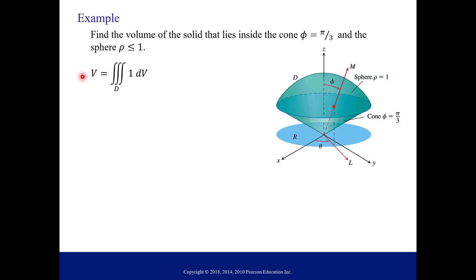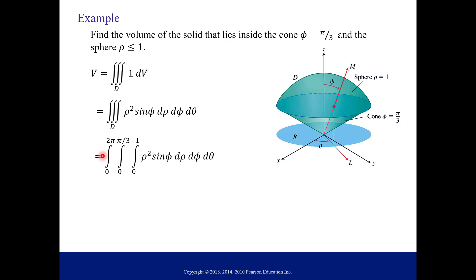The volume using a triple integral is the triple integral over region D of 1 times dV. We convert dV into spherical coordinates: ρ² sin φ · dρ · dφ · dθ. Now let's fill in the limits of integration. Rho is the innermost integral, going from 0 to 1. Phi starts on the positive z-axis at 0 and sweeps out to π/3. Then we rotate all the way around, so theta goes from 0 to 2π.